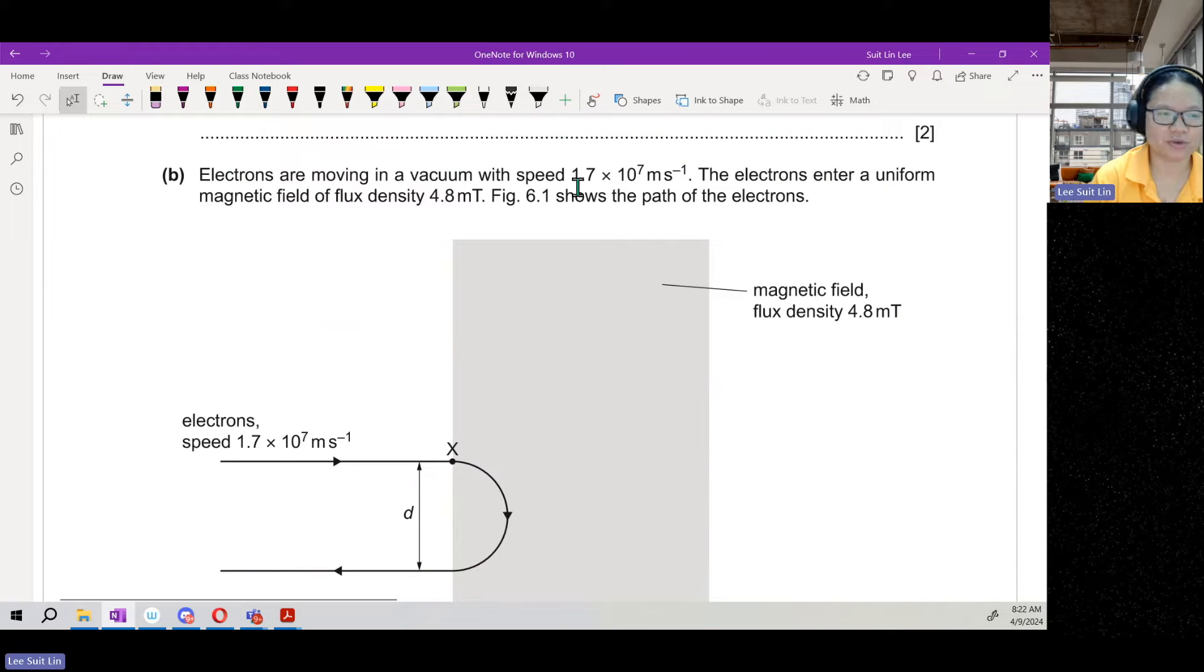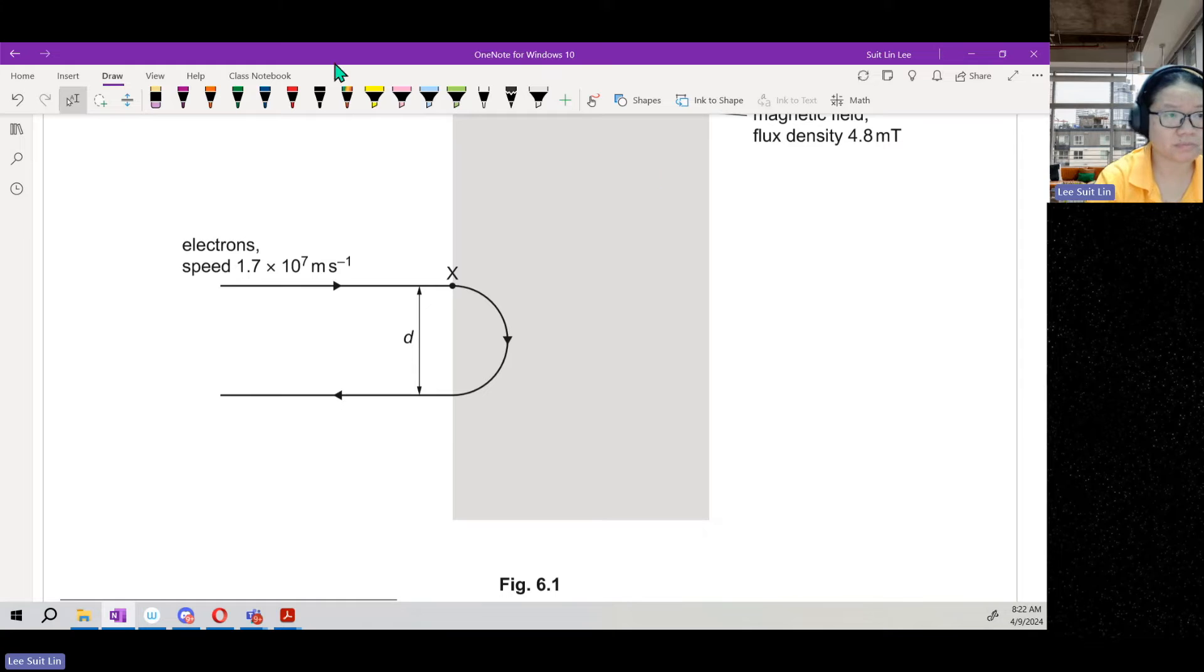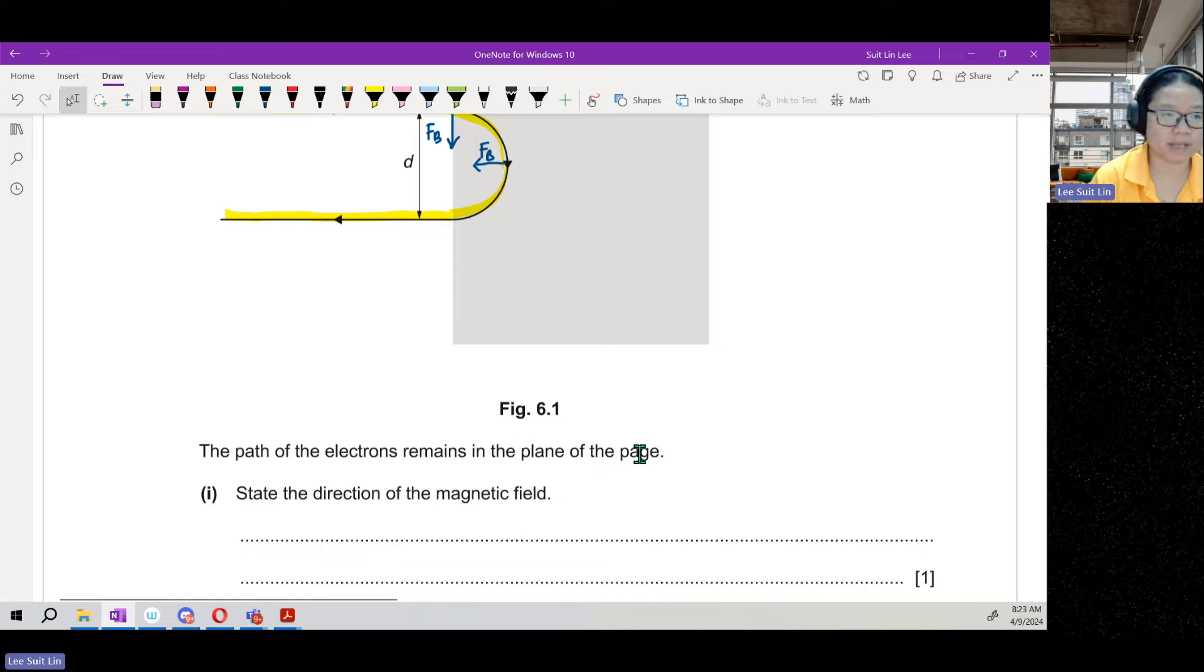Part B. Electrons are moving in a vacuum with this speed, quite a fast-moving electron. And the electrons enter a uniform magnetic field of flux density 4.8 mT. This is my B. So here is the path of the electron. The electron will go in, and then at this point it will experience a magnetic force. The magnetic force is obviously pulling the electron downwards, so the electron begins to turn. By the time the electron is here, the force will pull the electron to the left. Then the electron continues to turn. And then after that, before the electron can turn up, it has exited the magnetic field. The path of the electron remains in the plane of the page. So imagine the electron is on top of the page. State the direction of the magnetic field.